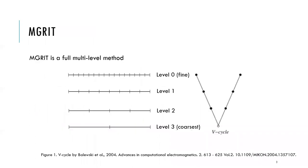MGrit is a full multi-level method, which means that there is a hierarchy of coarse grids in the temporal domain. For example, level 0 is the original grid, and level 3 is the coarsest grid. For the purpose of analysis, we focus on the two-level method.